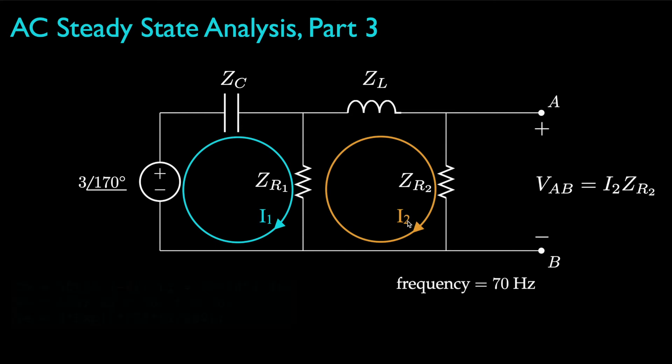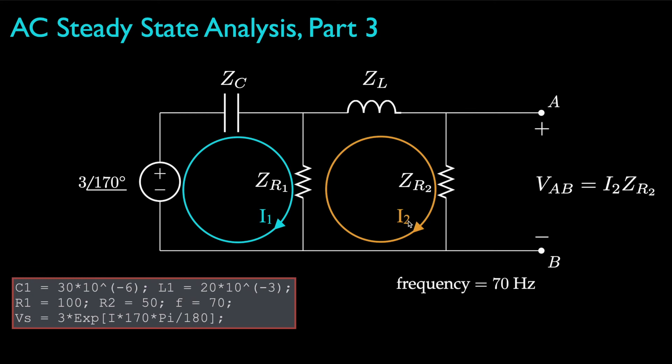Here, for example, are the instructions you might use in Mathematica. But of course, you could carry out similar steps with a variety of computing tools. Now the first things I do is assign the values for the capacitance, the inductance, the resistances, and the voltage source, noting that the source's phase is specified in degrees, which I need to convert to radians.